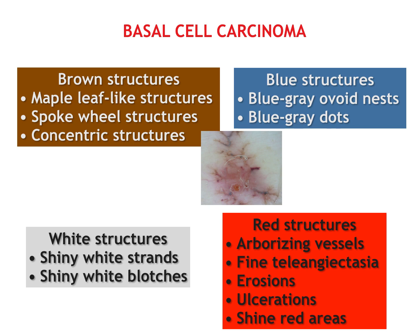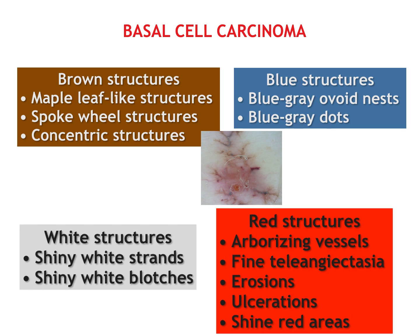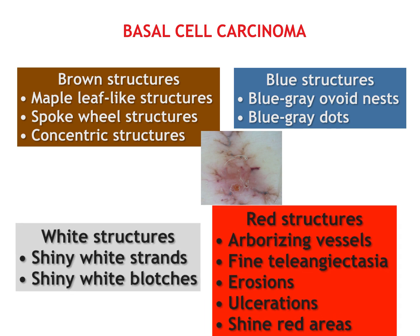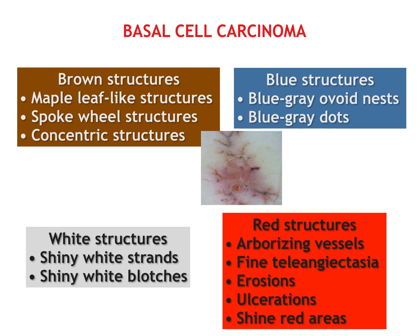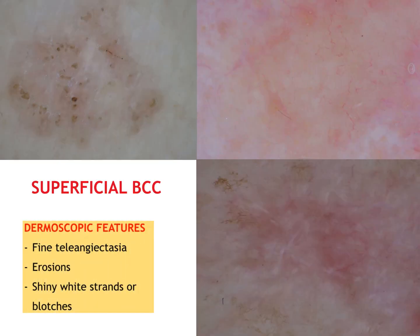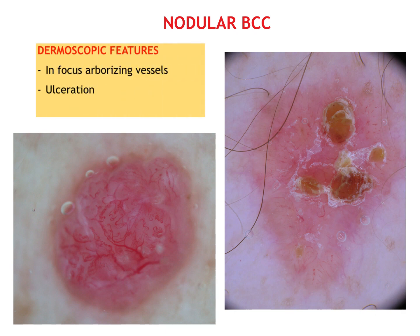The diagnosis of BCC could be more difficult if it's completely hypopigmented and shows only white and red structures. Features of hypopigmented superficial basal cell carcinoma include erosions, fine telangiectasia and shiny white strands. For nodular BCC, the prevalent detectable criteria are arborizing vessels and ulcerations.